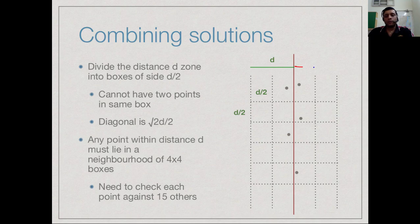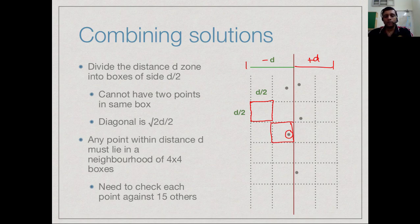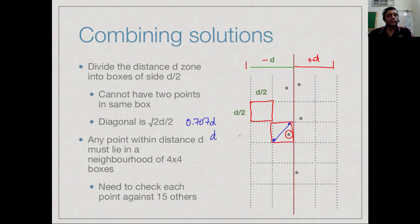Now let us take a closer look at this ±d zone. We break it up into squares of size d/2 × d/2. The claim is that inside such a box there can be at most one point. Why? Because the furthest separation within a box is across its diagonal. The diagonal of a square of side d/2 is (d/2)√2, which is strictly less than d. But this square is completely on one side of the separating line, and on each side the minimum separation is d (since d = min(dq, dr)). Therefore each box contains at most one point.